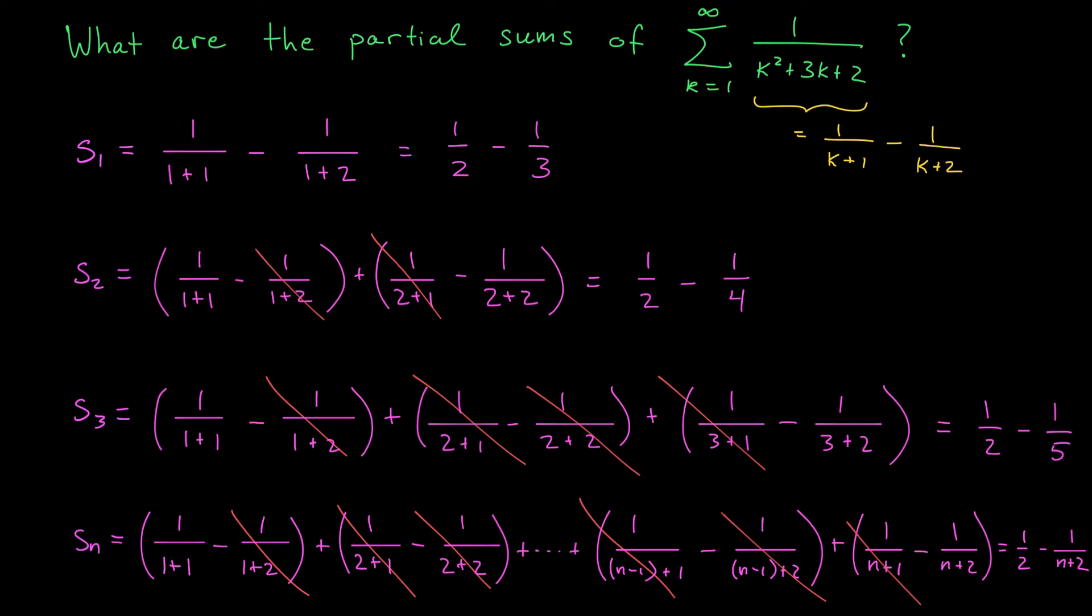Series like this where the partial sums collapse in the middle are called telescoping series. You can imagine an expandable telescope being collapsed into something very small. Let's see how we can analyze the convergence of this series based on the partial sums that we've found.